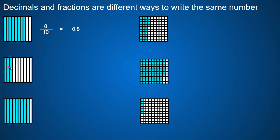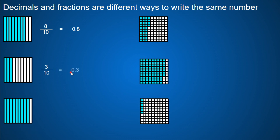Now 3 tenths — there are 3 shaded in out of a total of 10. That will equal as a decimal 3 tenths, 0 and 3 tenths. That is 3 tenths because the 3 is in the tenths place.